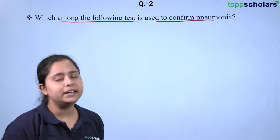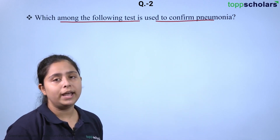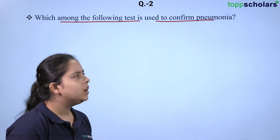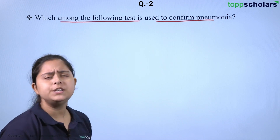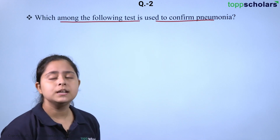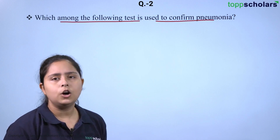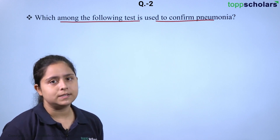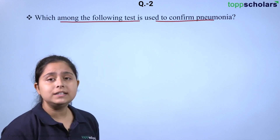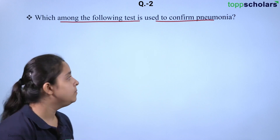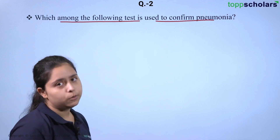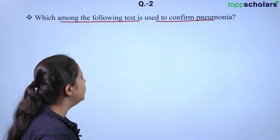Pneumonia is a condition where the lungs are filled with fluids. Common causative agents for this condition might be bacteria or viruses. One agent is Salmonella. Now let us have a look at the options that are provided to us.